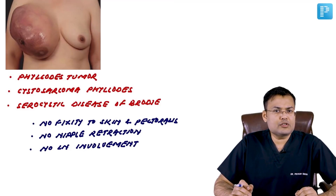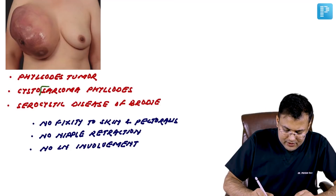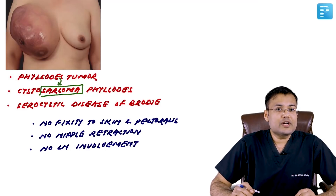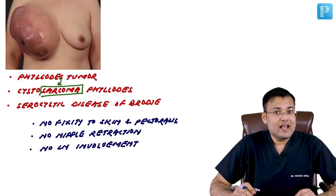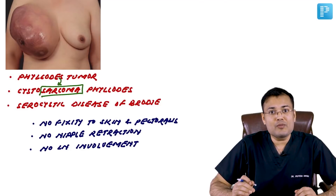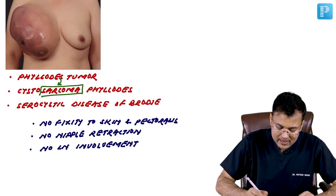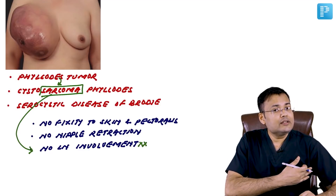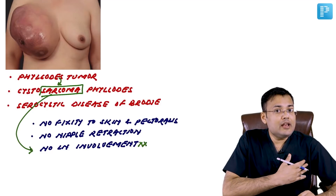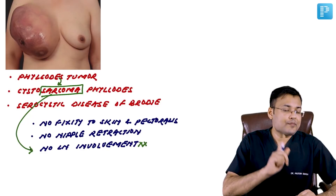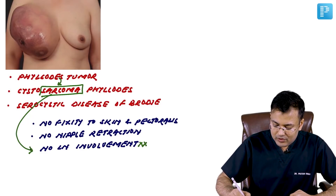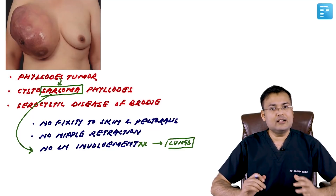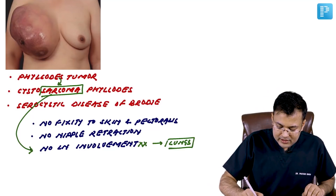How to differentiate phyllodes tumor from carcinoma breast? Phyllodes tumor is a type of sarcoma — its name is cystosarcoma phyllodes. The most common route of spread in carcinoma is lymphatic, whereas in sarcoma it is hematogenous. Phyllodes tumor behaves like a sarcoma — there is hematogenous spread, no lymphatic spread, and therefore no lymph node involvement, so lymph node dissection is not required.